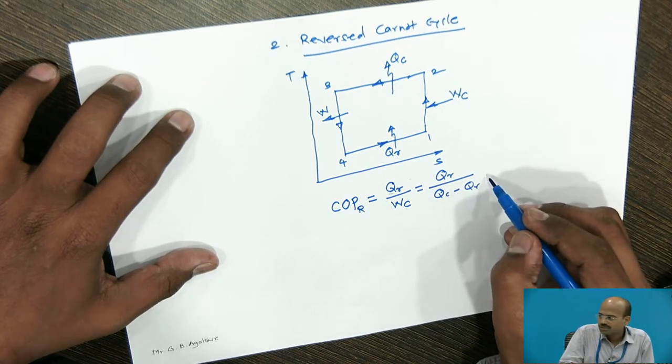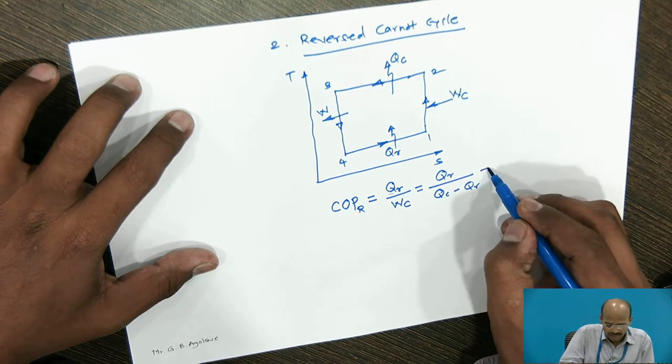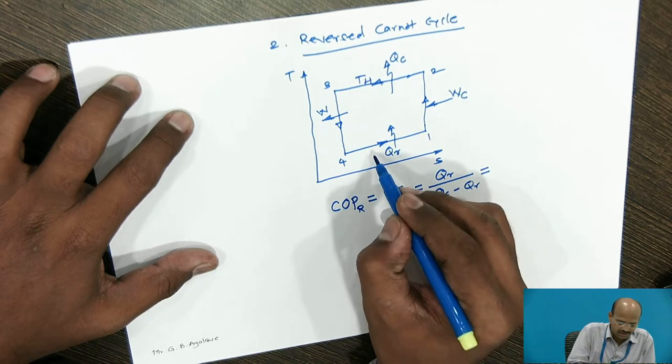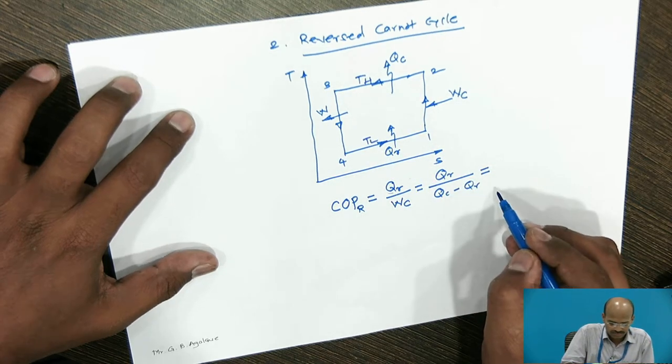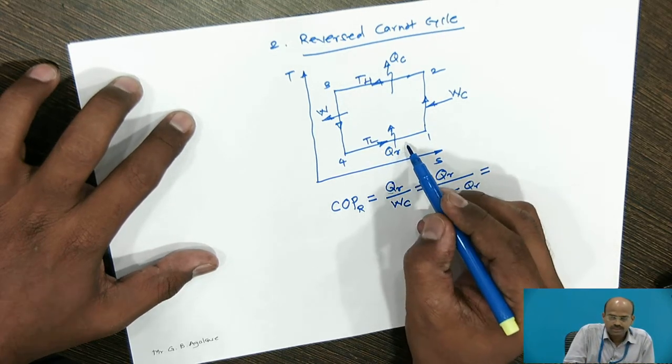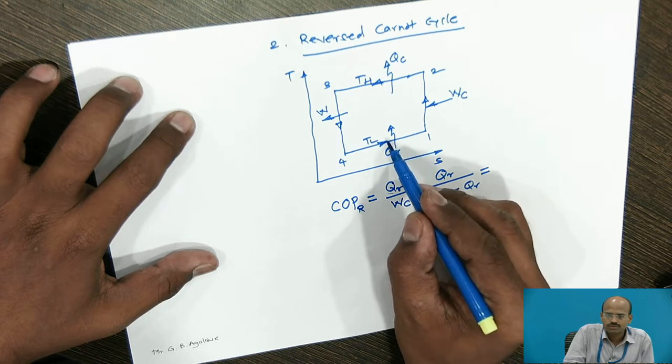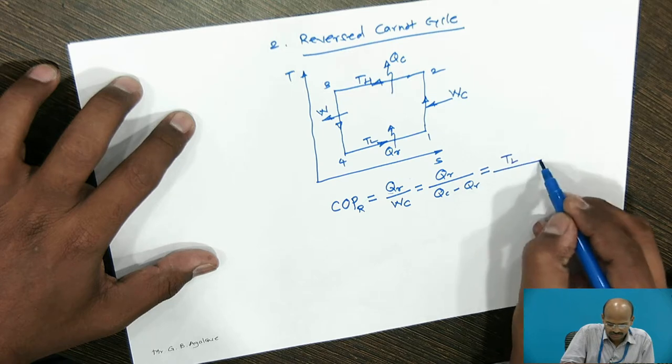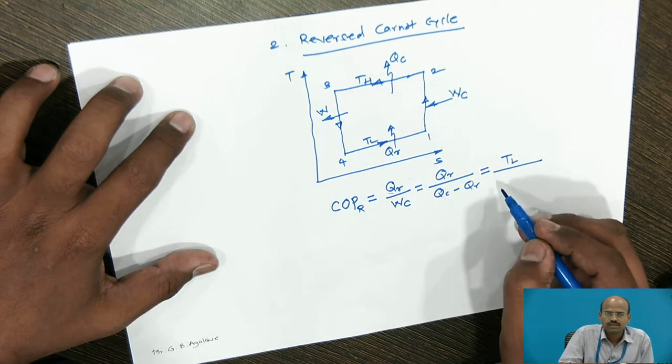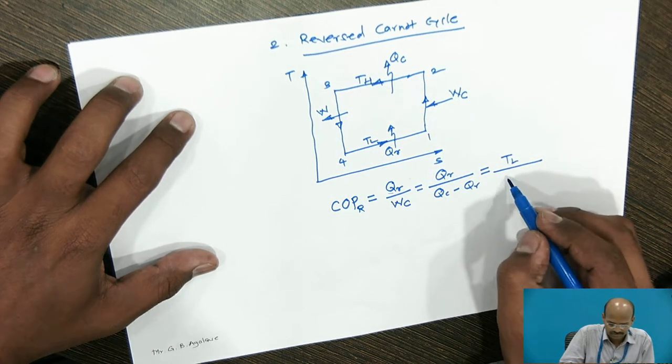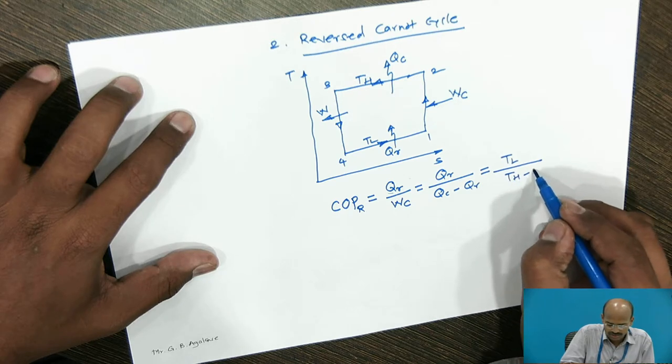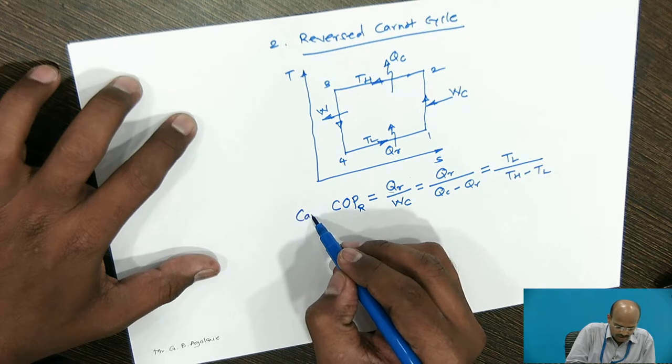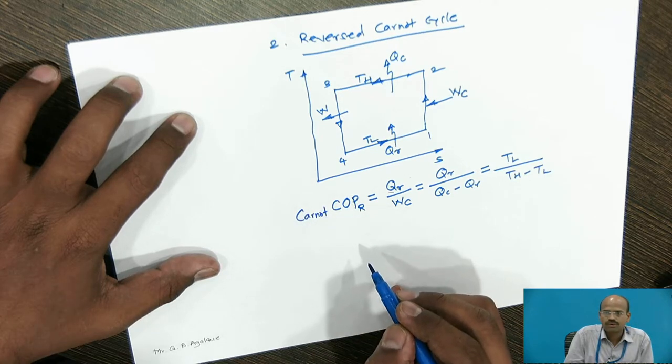This Q can be replaced by temperature. Once again, I will use the notation TH and TL. The heat is absorbed from the source at low temperature. So, here I can write TL divided by TC is high temperature sink. So, this is TH minus TL. This will be the Carnot COP for refrigerator.